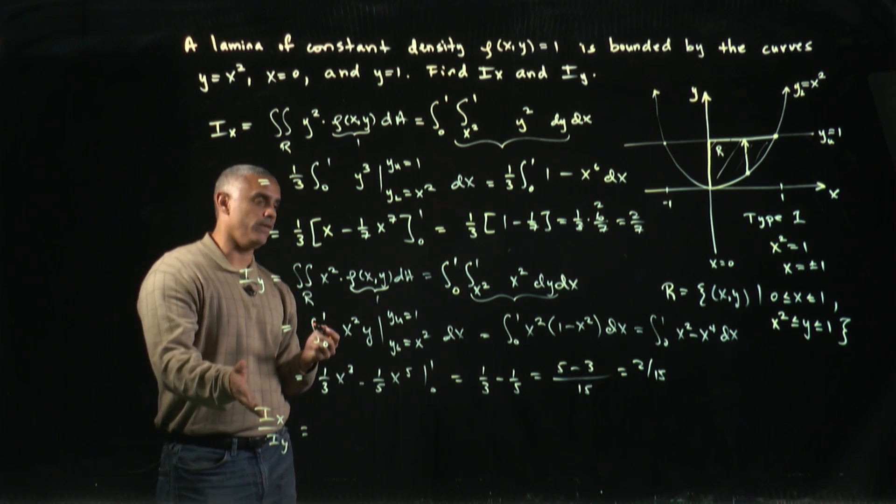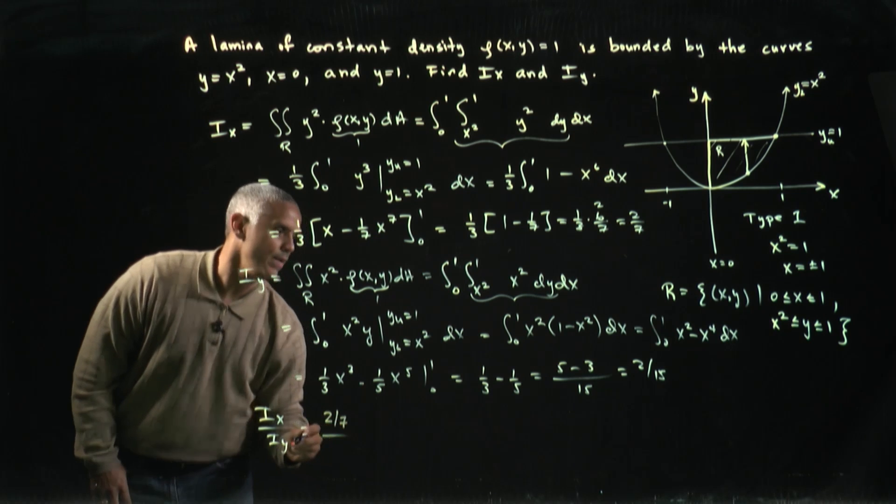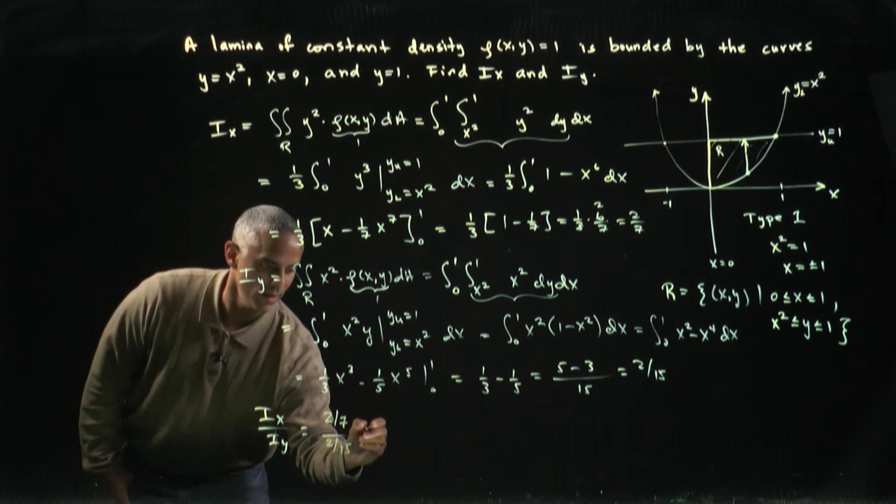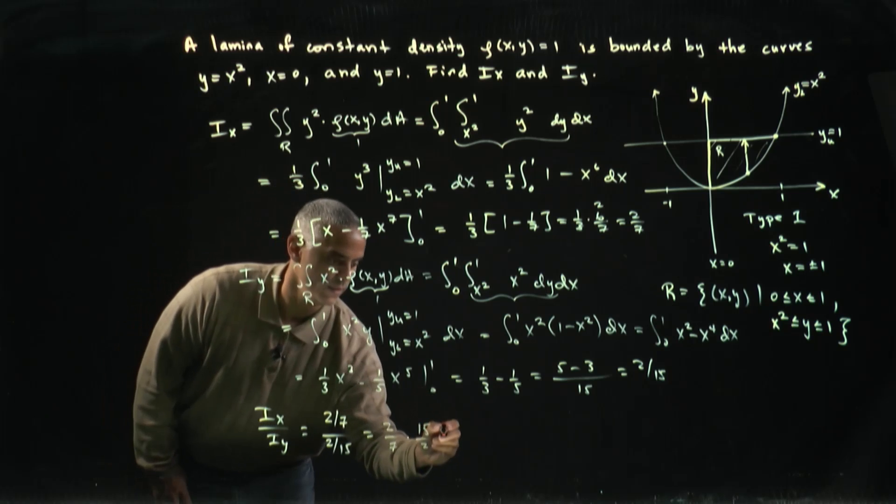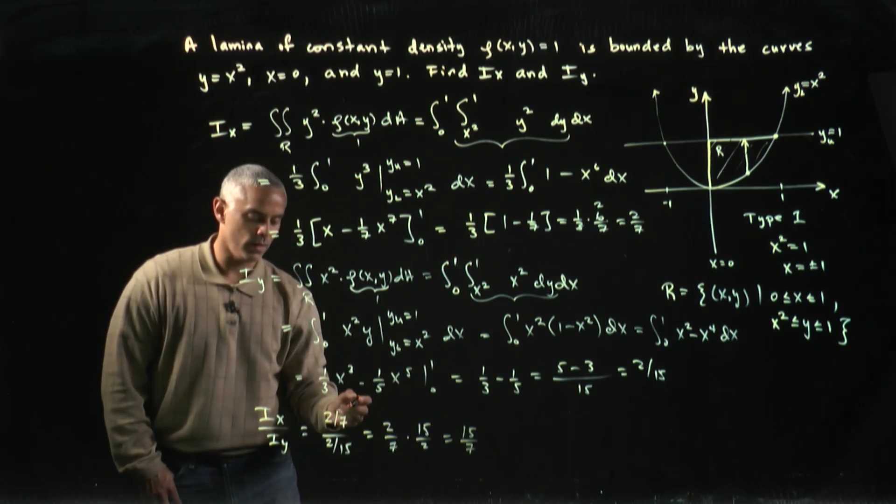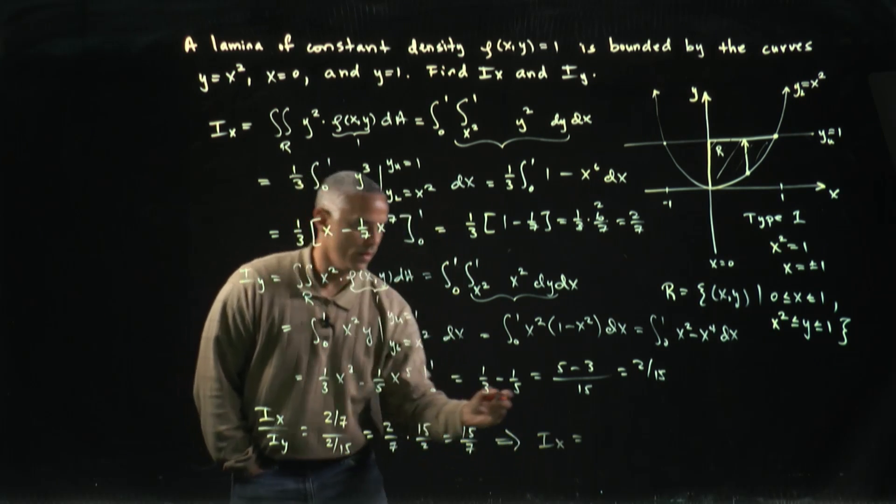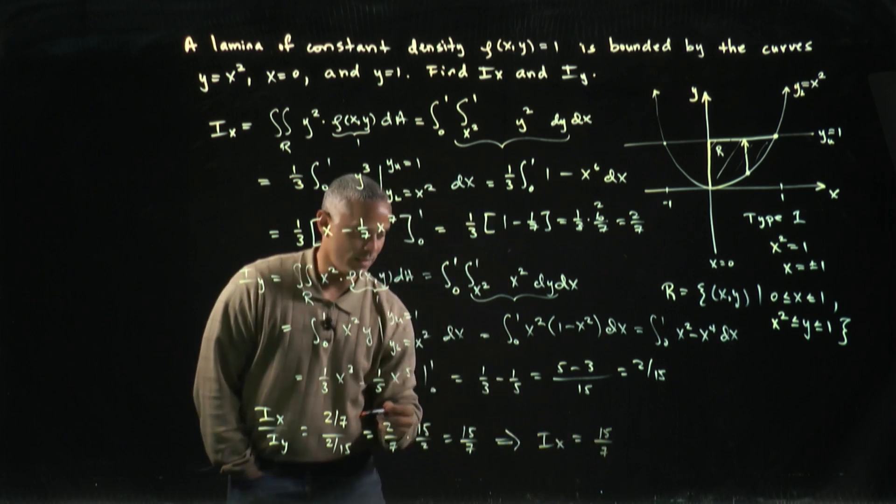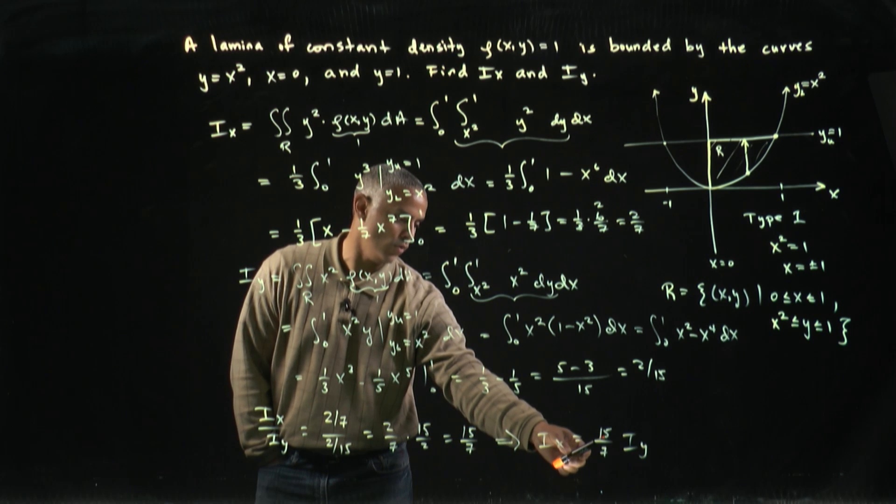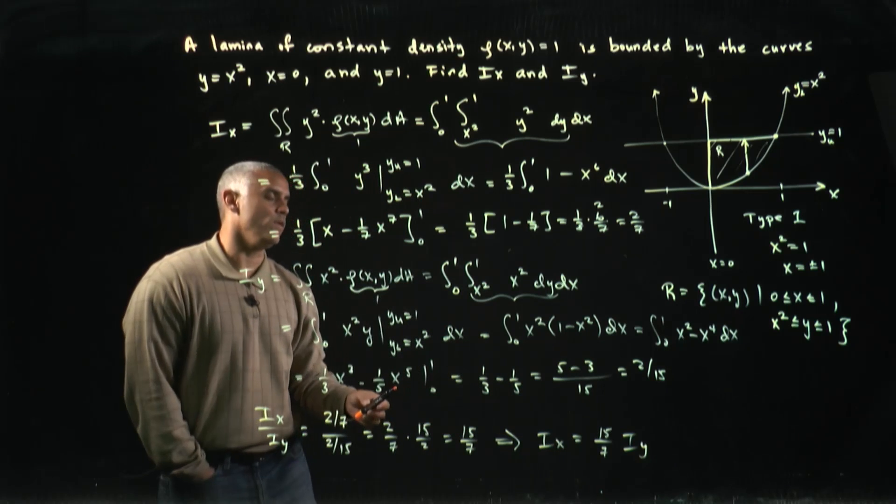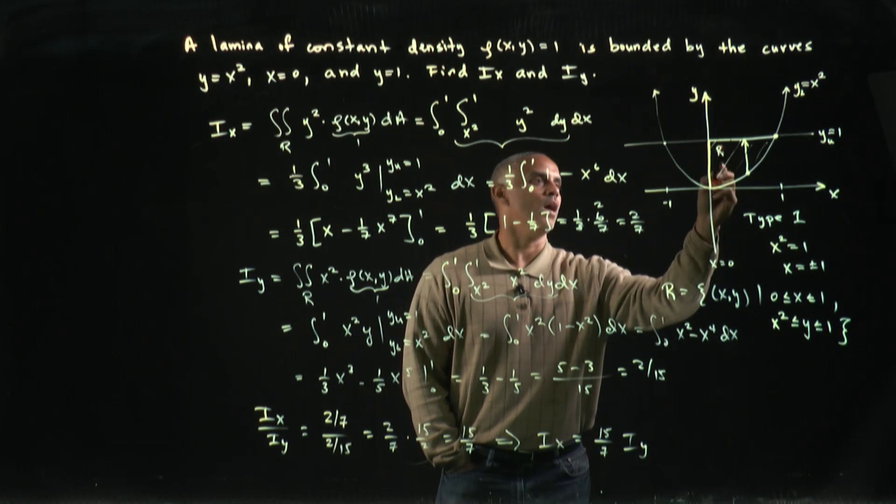When we compare numbers, we can compare them through division or subtraction. Let's see, I'll have two-sevenths divided by two-fifteenths. If I invert and multiply, I get two-sevenths times fifteen-halves, which gives me fifteen-sevenths. Another way to say this is that I_x is equal to fifteen over seven times I_y.